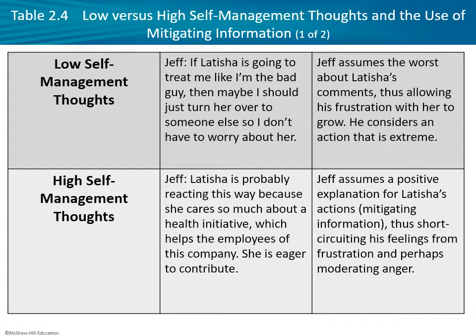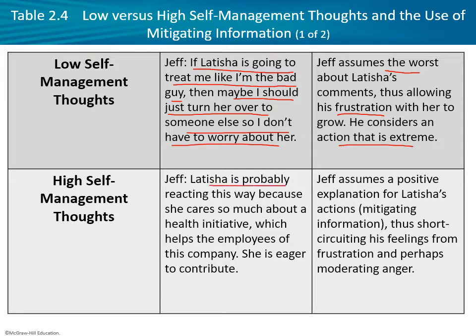Here are some low versus high self-management thoughts. With low self-management, Jeff thinks: 'If Leticia is going to treat me like I'm the bad guy, then maybe I should just turn her over to someone else so I don't have to worry about her.' He's assuming the worst, frustrated, and considering an extreme overreaction. With better self-management, he'd think: 'Leticia is probably reacting this way because she cares so much about the health initiative and is eager to contribute.' He's assuming a positive explanation and short-circuiting his frustration.